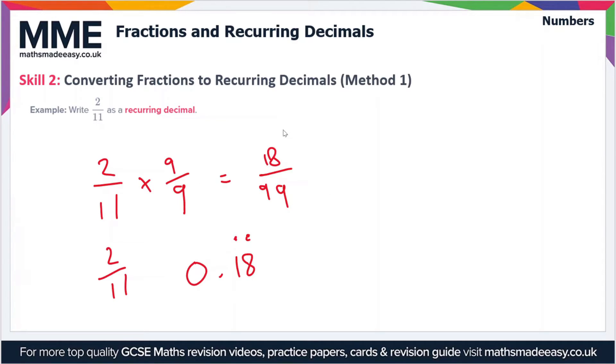So two elevenths is equal to 0.18 recurring, and this works for any fraction if you can turn the denominator into nothing but nines.